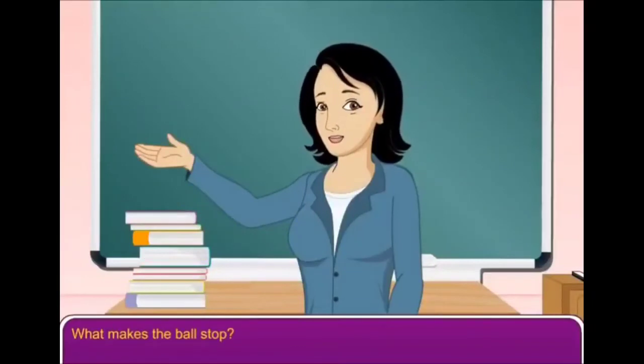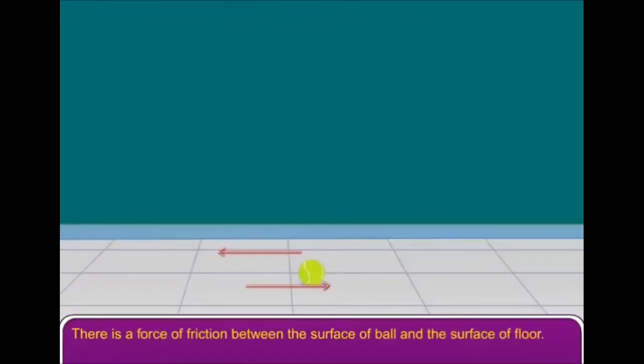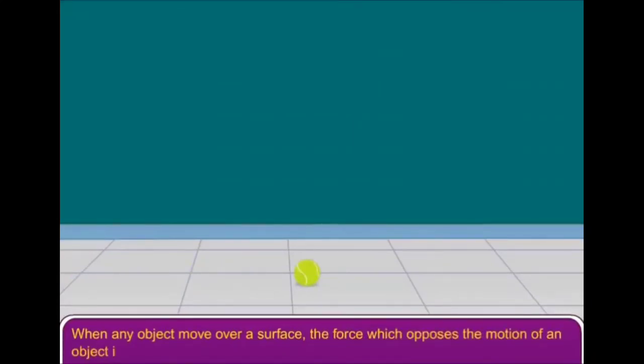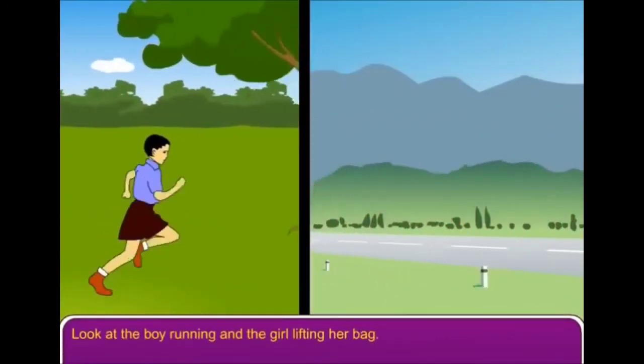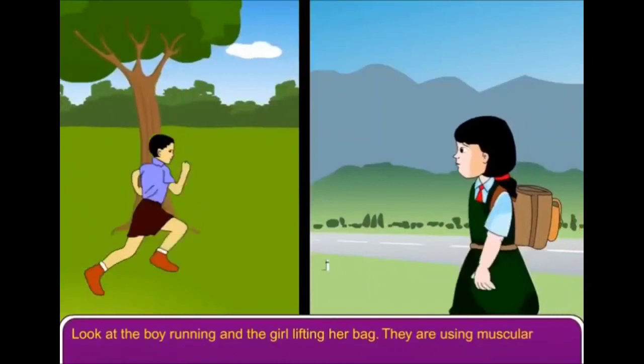Activity 4: Roll a ball on the floor. After some time it stops though no force is applied. What makes the ball stop? There is a force of friction between the surface of ball and the surface of floor. It is this force of friction that makes the ball stop after some time. When any object moves over a surface, the force which opposes the motion of an object is called frictional force. Look at the boy running and the girl lifting her bag - they are using muscular force.